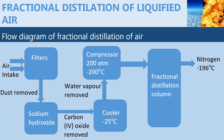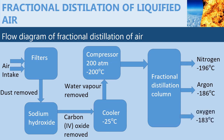Now, nitrogen is collected as the first fraction because it has a lower boiling point. Then argon, which is mainly the major component of noble gases, is collected as the second fraction. And oxygen is collected as the final fraction.